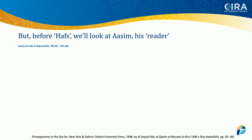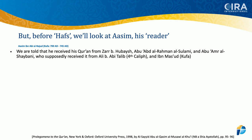Before we even get into Hafs, I want to talk about his stable — the man from whom his tradition came. Let's talk about Asim. He is the reader; he is the stable that Hafs came from. What we know about Asim is that he supposedly received his Quran from Zahr ibn Hubaysh, Abu al-Rahman al-Sulami, and Abu Amr al-Shaibani — who trace it back to Ali ibn Abi Talib, the fourth caliph, and to Masud of Kufa. Do any of their Qurans exist today? Of course not. This is nothing more than hearsay and attribution.